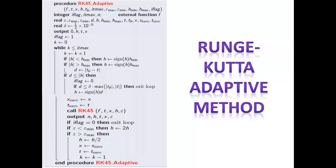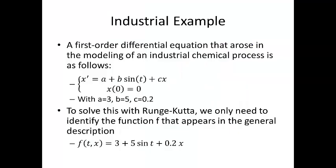So, a first order differential equation that arose in the modeling of an industrial chemical process is given as follows. x prime is equal to a plus b sine t plus c times x. And x zero is equal to zero. a is equal to 3, b is 5, and c is equal to 0.2. So, this equation is amenable to the solution techniques of calculus. In fact, you can get an analytical solution. In particular, the use of an integrating factor. However, the analytic solution ends up being pretty complicated and a numerical solution may be preferable. To solve this with Runge-Kutta, we only need to identify the function f that appears in the general description.